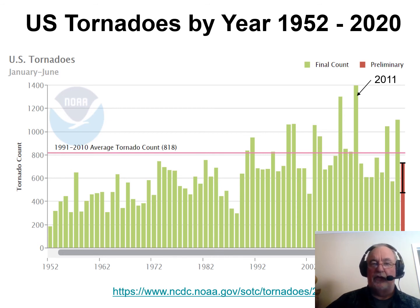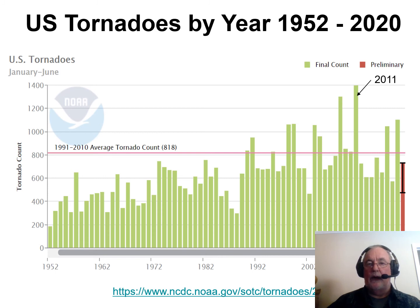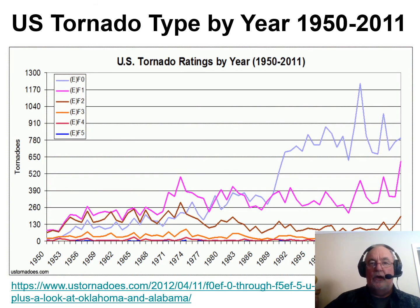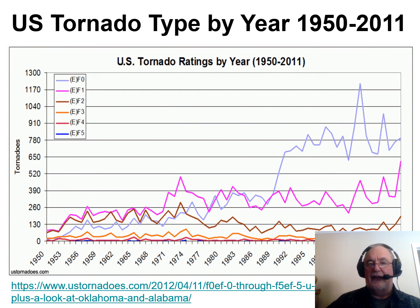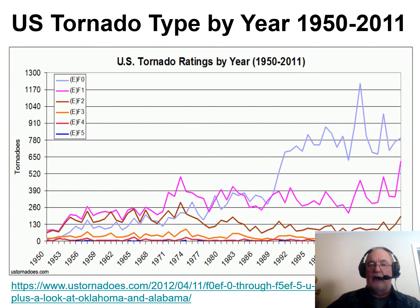Looking at US tornadoes by year from 1952 to 2020, the 1991–2010 average is just over 800 tornadoes per year. In some years we get over 1,400. In 2011 there was a major outbreak in April and May with catastrophic tornadoes. The great majority of tornadoes are EF0 or EF1 — destructive enough, but luckily we don't see many EF3, 4, or 5s. However, 2011 saw quite a spike in higher-intensity activity.